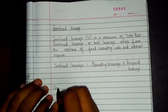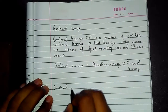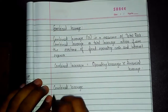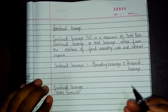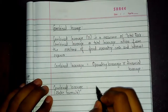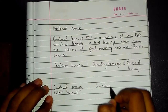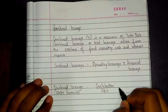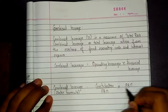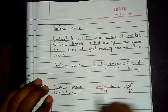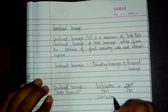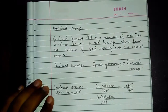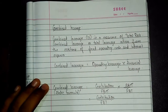I'll show how it is applicable. For the static formula, first we write the operating leverage formula, which is contribution upon EBIT, into the financial leverage formula, which is EBIT upon EBT. Therefore the combined leverage static formula is contribution upon EBT.